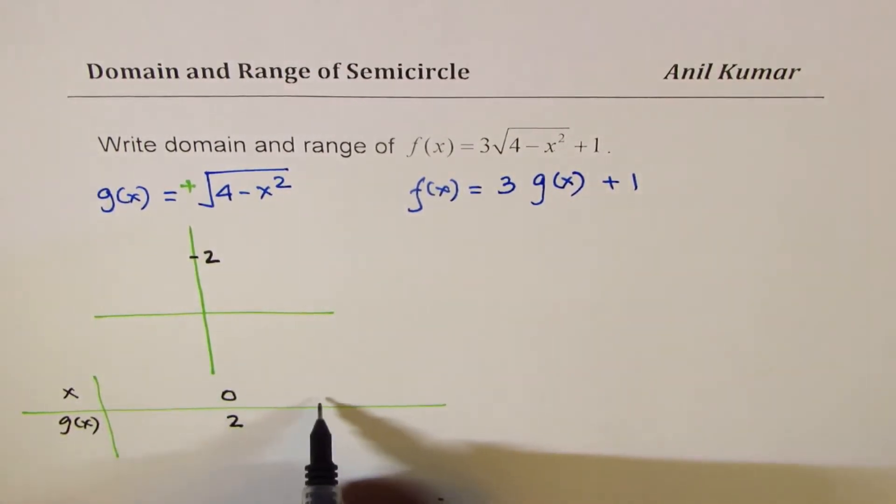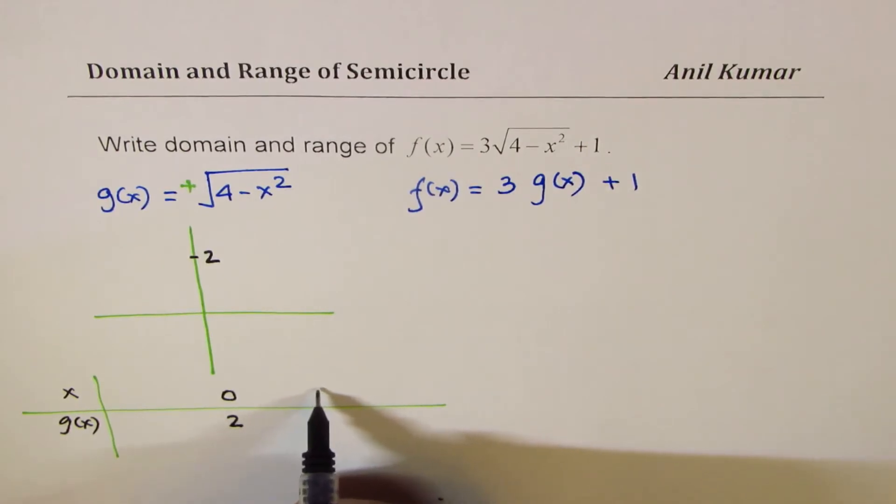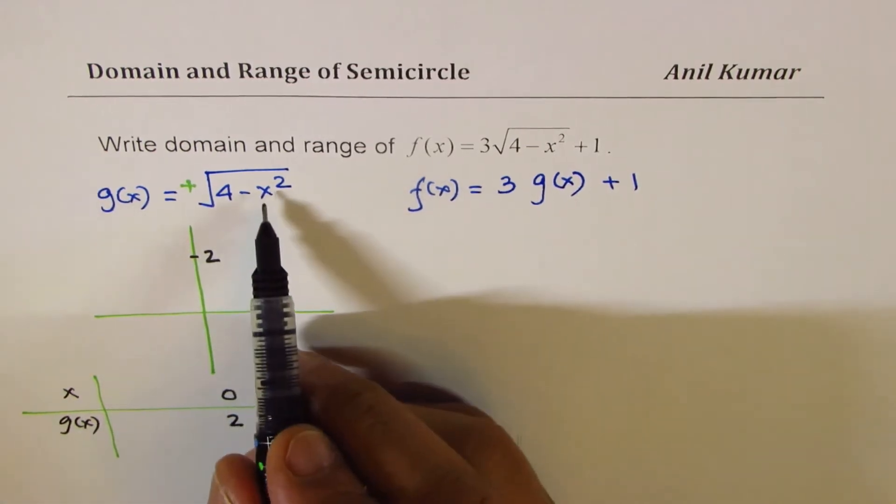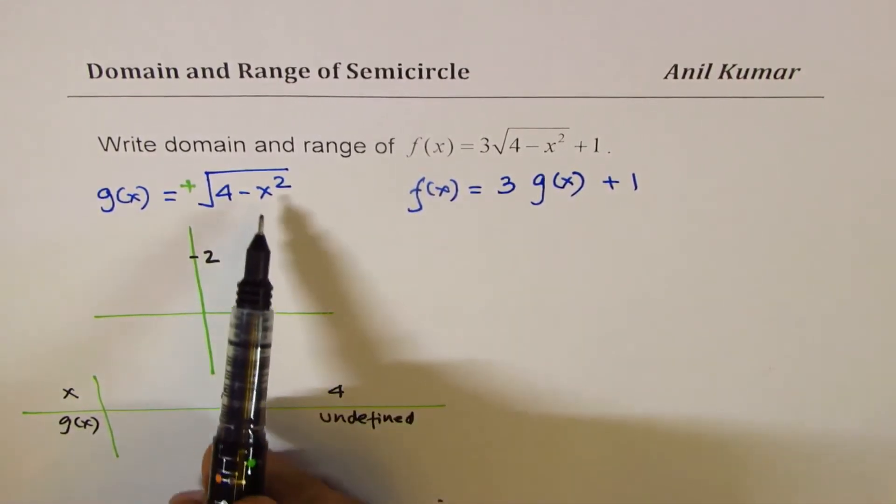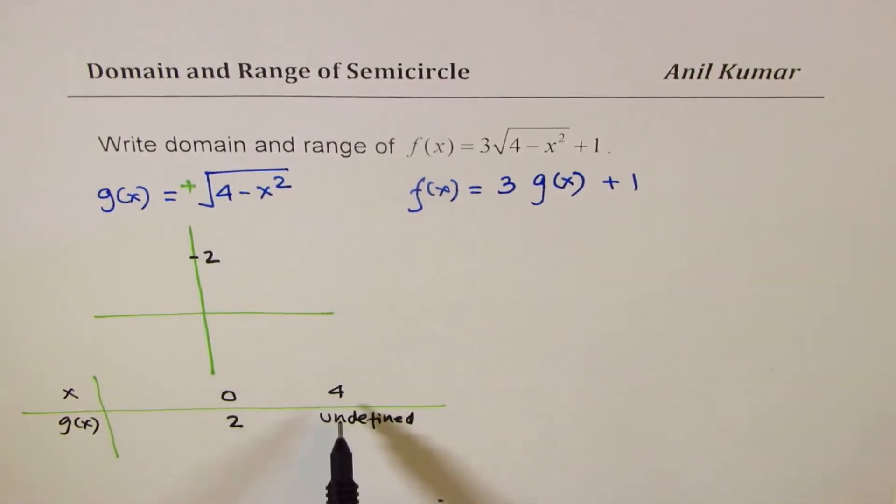Now, if I take a value 4, so let's take a value 4. In that case, what happens? Now, 4 square is 16, so I get undefined. So that means that this is not defined when it is 4.